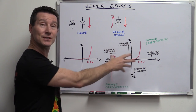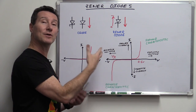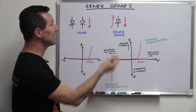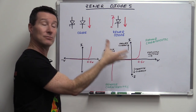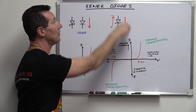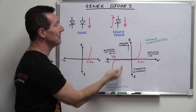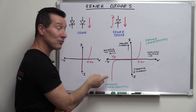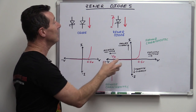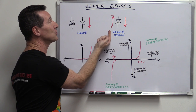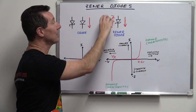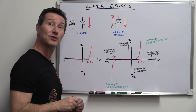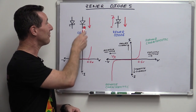Now we can annotate our characteristic graph with some industry terminology. Up here we've got the forward characteristic — the characteristic of the Zener diode in the forward current direction with the forward voltage. And naturally we've got the reverse characteristic down here, which shows what happens when you try and push current in the other direction with reverse voltage, leading to the Zener breakdown voltage.